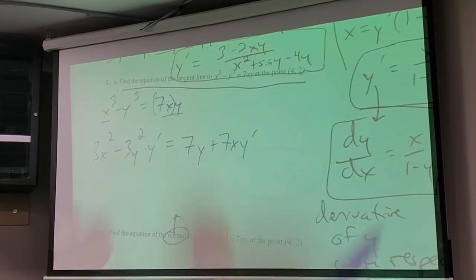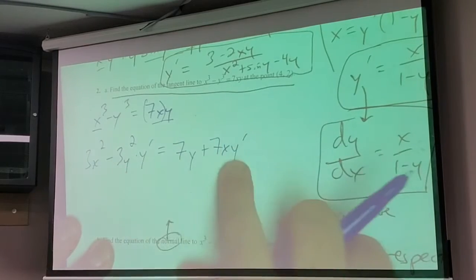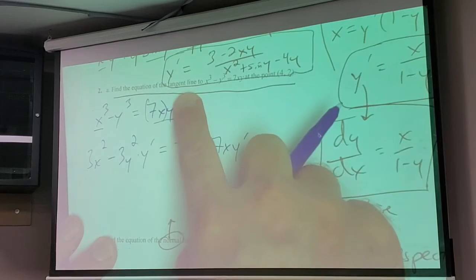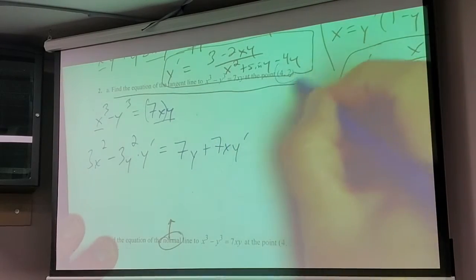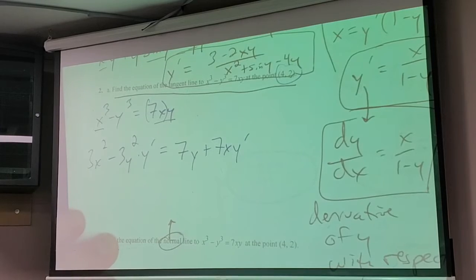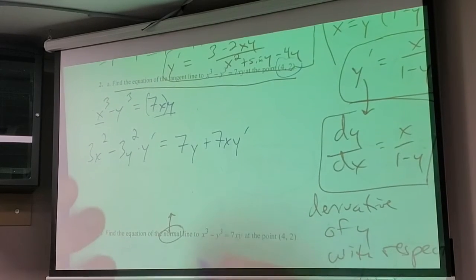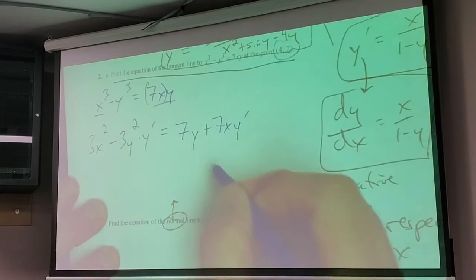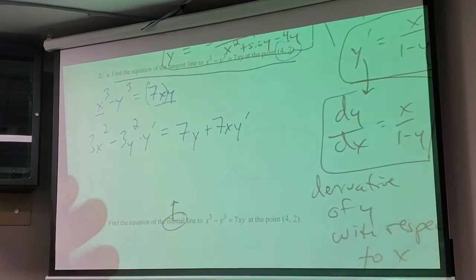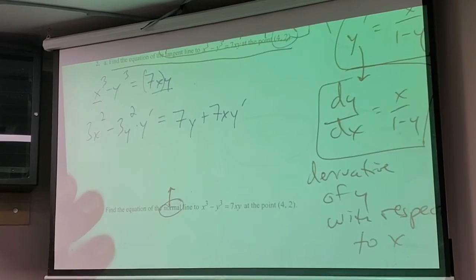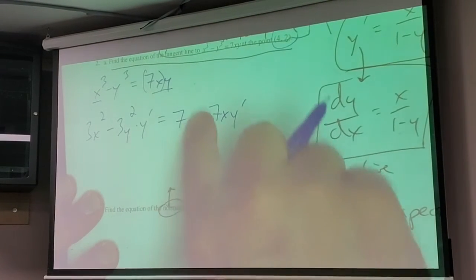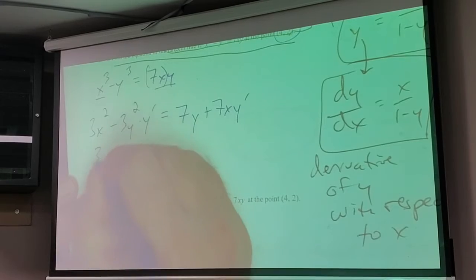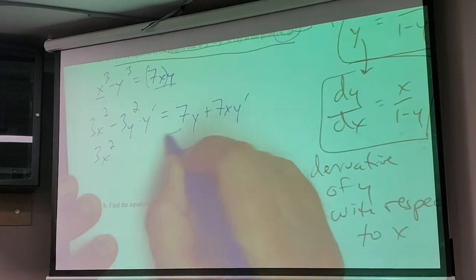What do I need? What information do I need to find the equation of the line? I need y prime — I need to know the slope. I already know the point is (4, 2). I just need to know the slope, so I need to solve this thing for y prime. To do that, I'd add this and subtract this to keep my y prime stuff positive.